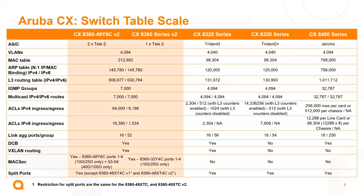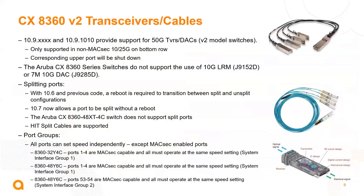Another thing to highlight is the table scale supported on the 8360 switch series. These are our common data center platforms. The 8360 series can support upwards of 4,000 VLANs, 212,000 MAC table addresses, 145,000 ARP table entries, or even upwards of 600,000 Layer 3 routing table entries for IPv4 and IPv6. Also note that with 10.9 and 10.10 we enabled support for 50 gig transceivers and DACs — only on v2 models, only in non-MACSec ports, and only on the bottom row.